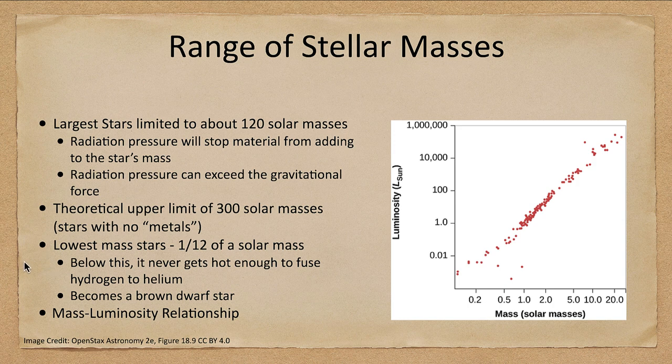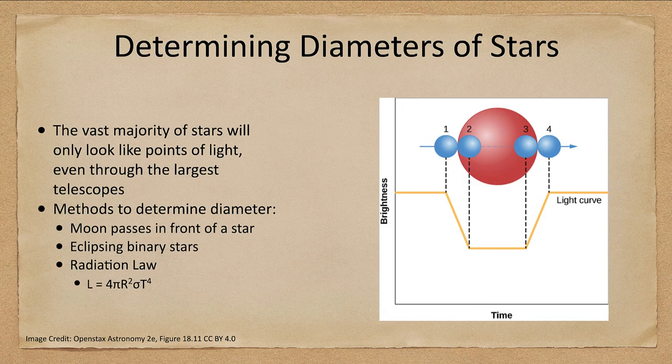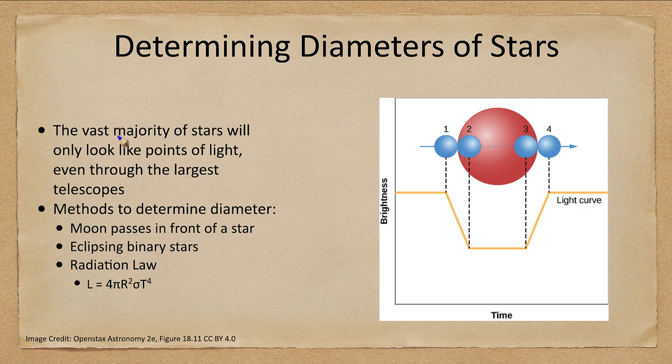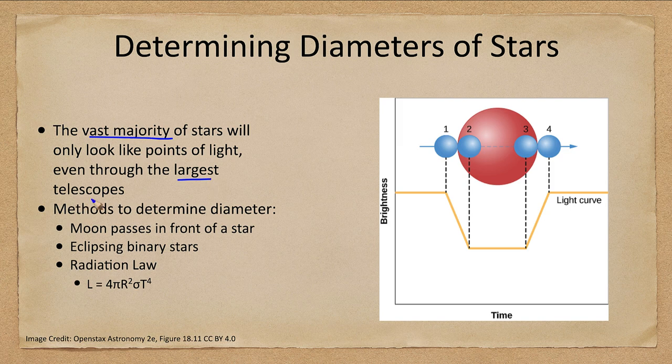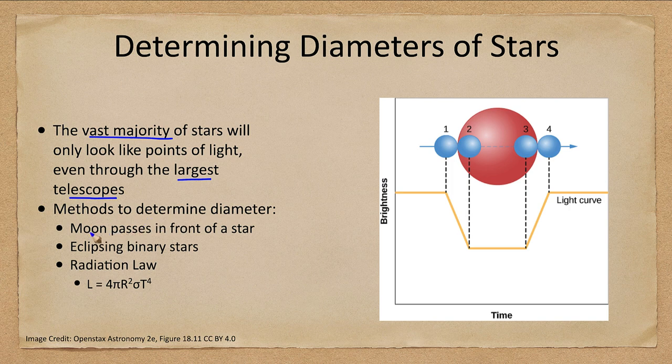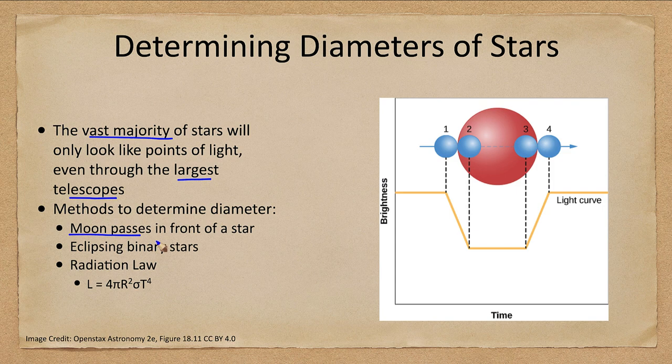So that's a little bit about masses. How do we determine the diameter of a star? Well a vast majority of stars look only like points of light even through very large telescopes. However we do have some methods to determine the diameter. If the moon passes in front of a star we can use that to measure by the amount of time it takes for it to dim as the moon passes in front of that.